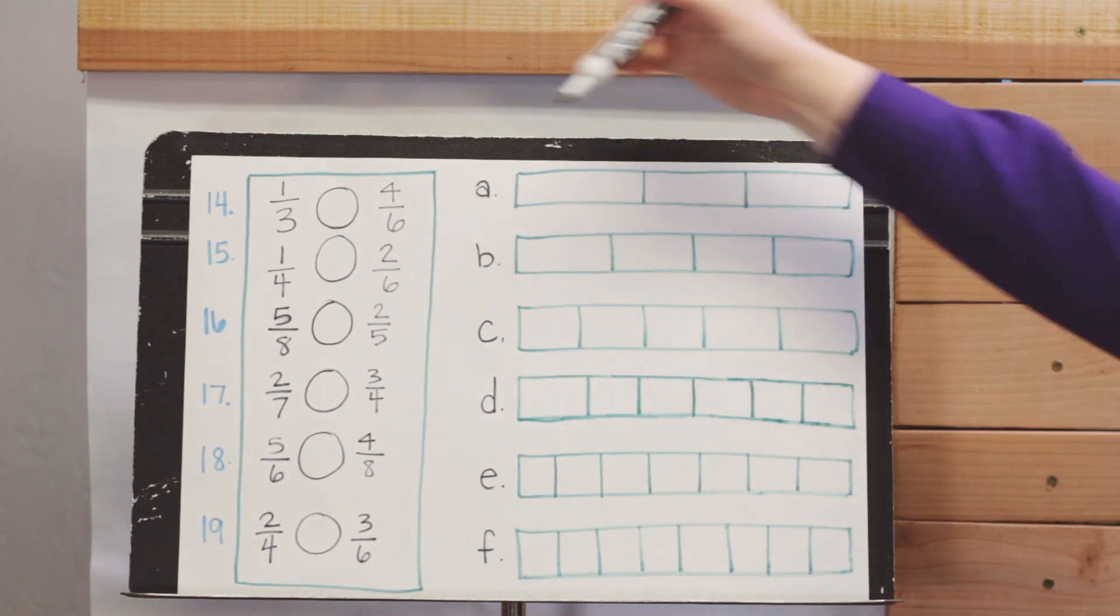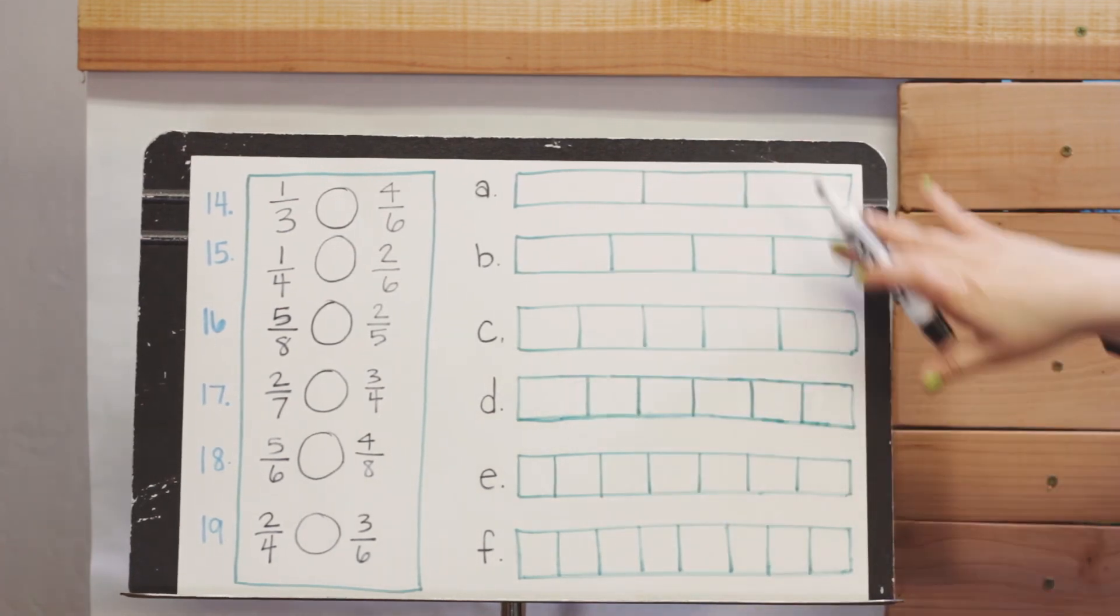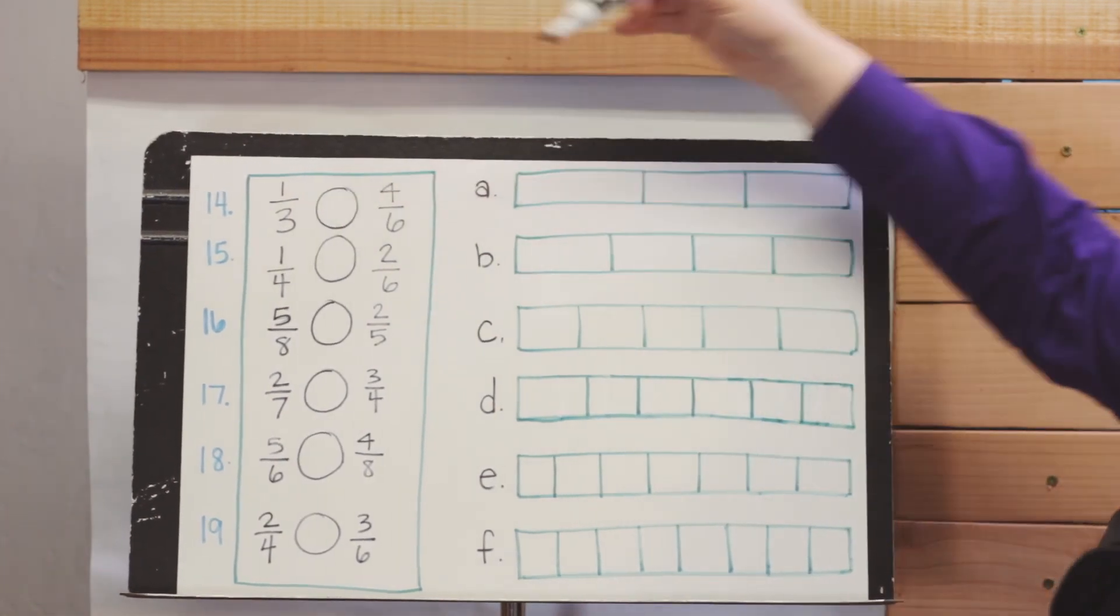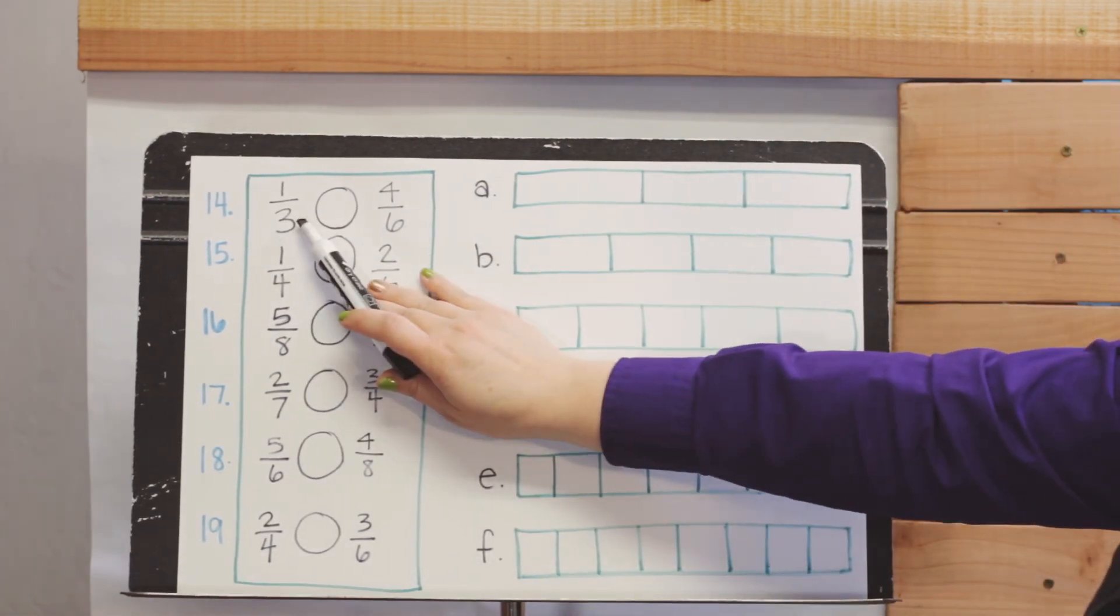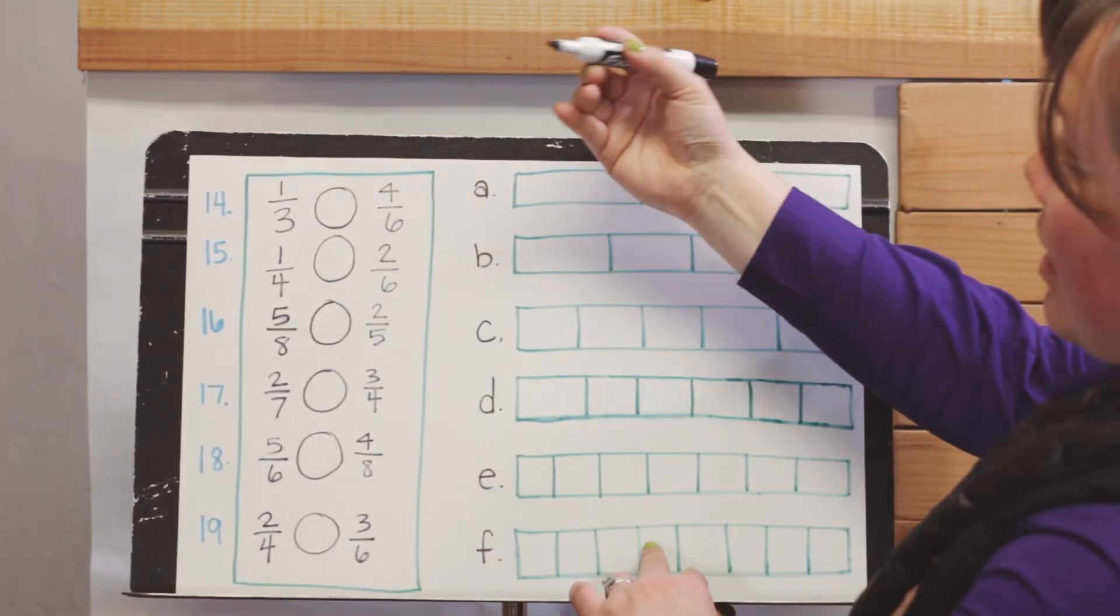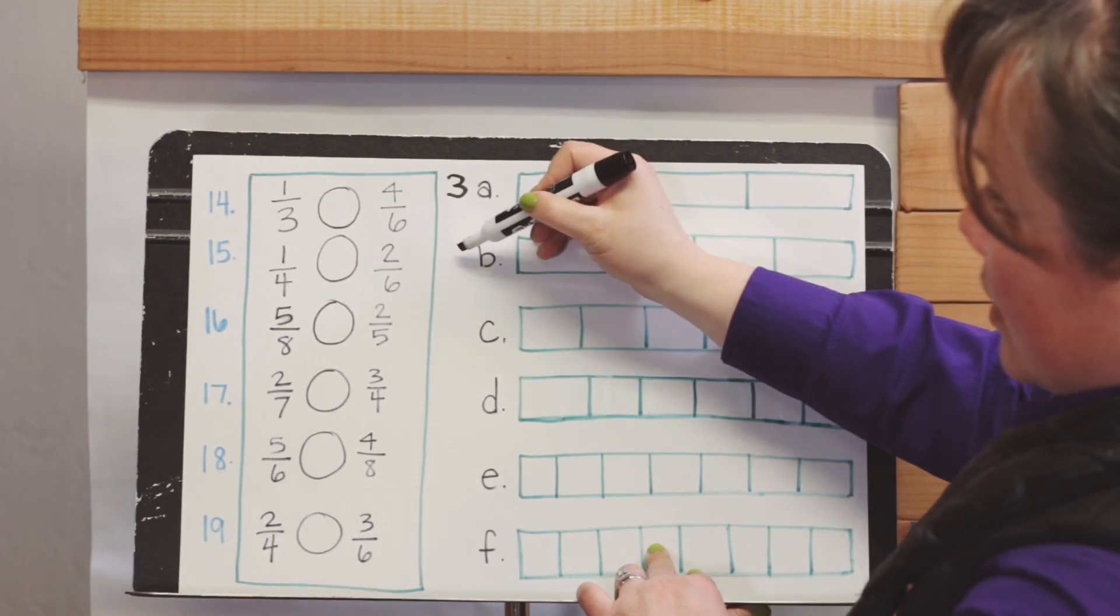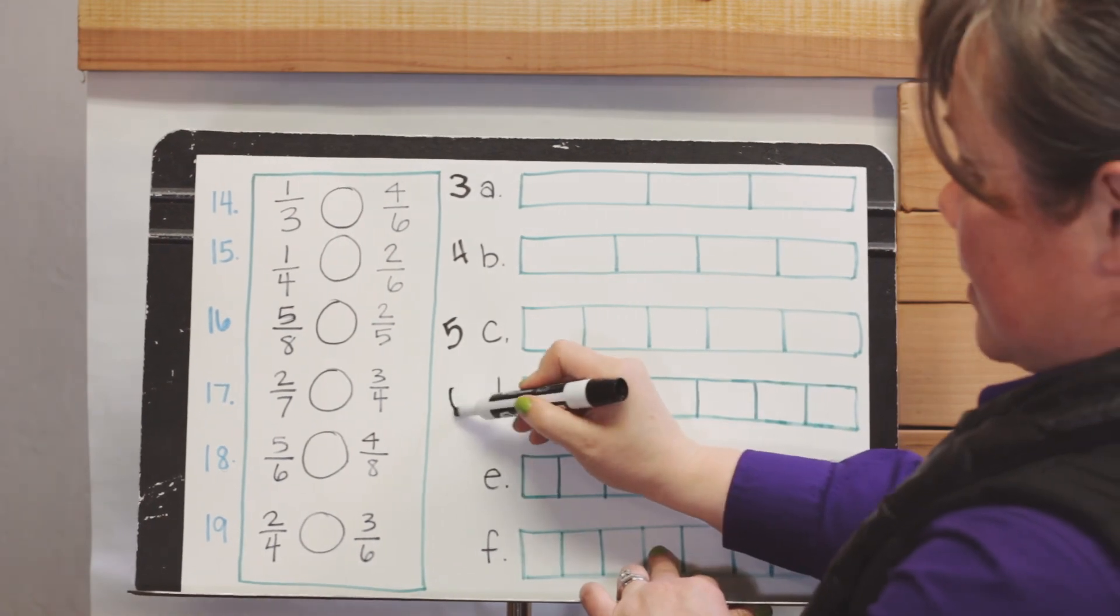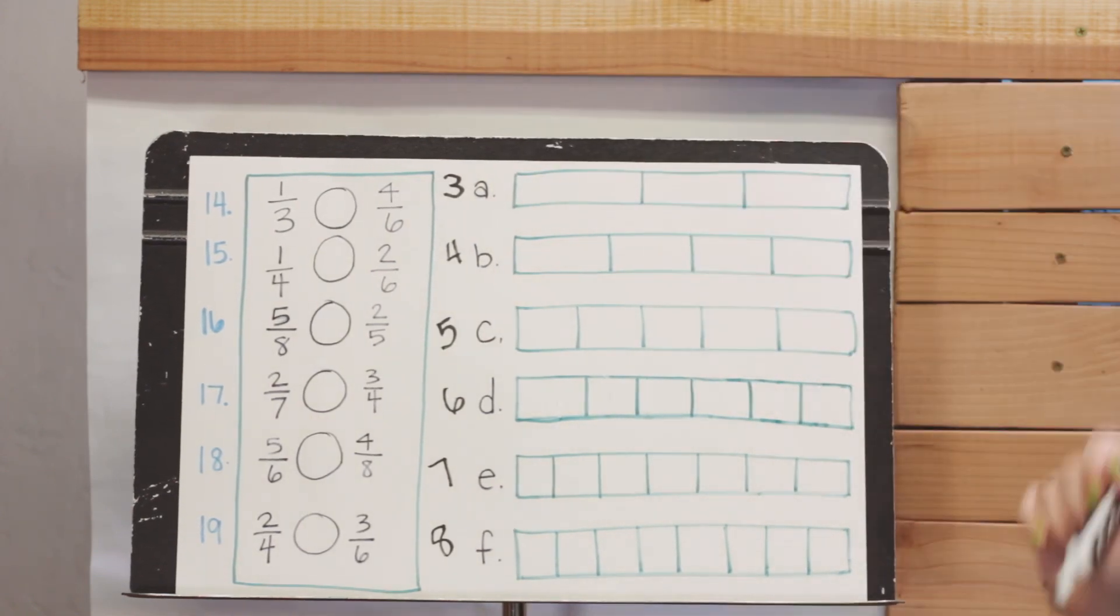What they want you to do is they want you to compare one-third with four-sixths. And they're giving you these blank bars so that you can try to see which one is larger. For one-third, I'm going to find this section. In this section, I'm going to find which one is divided into three total parts. And that would be A. A has three total parts. And I actually, if I were you, would mark how many total parts are in each. So this one's got three, this one's got four, this one has five, this one's got six, and you can guess seven and eight. This gives me a little hint so that I don't have to keep counting them over and over.